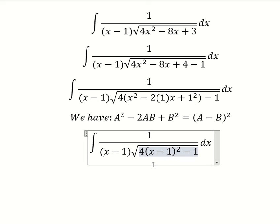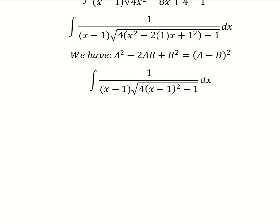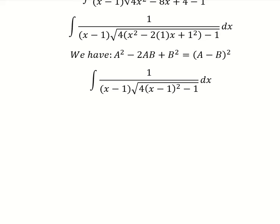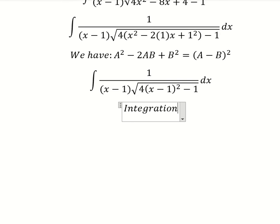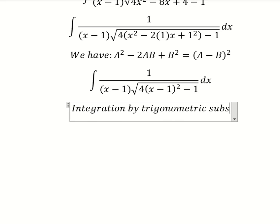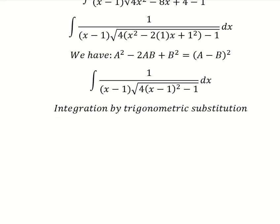And we have like this. Next we can use integration by trigonometric substitution. So I will put x - 1 equals to 1/2 sec(t), because if I put this one in here we have 1/4 sec²(t).